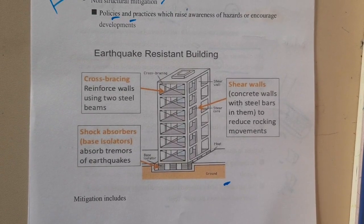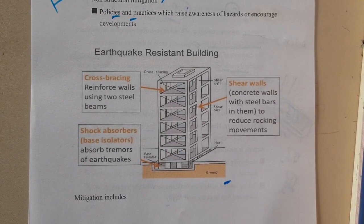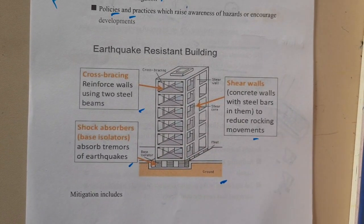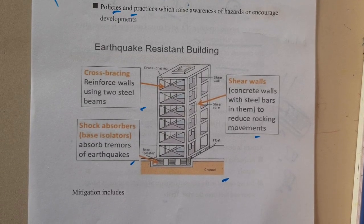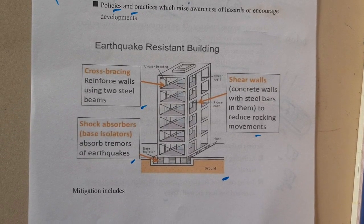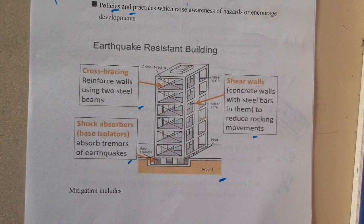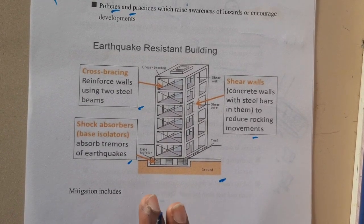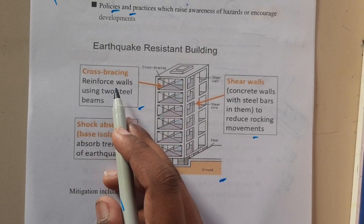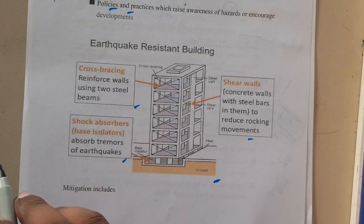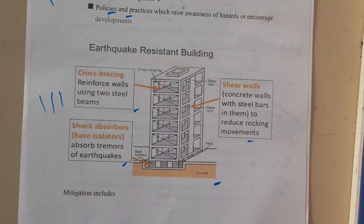Some buildings or places are more prone to earthquakes. If there are chances of earthquakes, there are three common techniques followed to reduce the chances of buildings collapsing. In Jammu Kashmir and many other places where earthquake chances are high, buildings are constructed with these techniques. The first is cross bar bracing, where steel beams are used — even normal buildings use metal or steel beams.